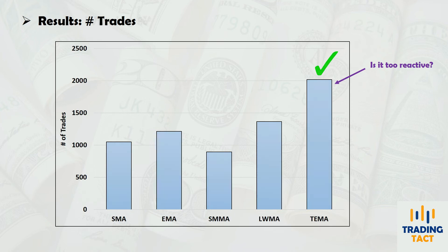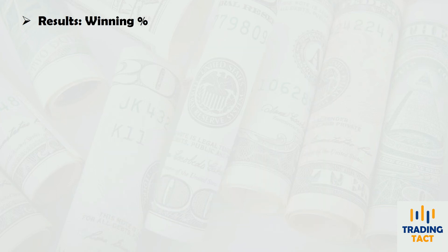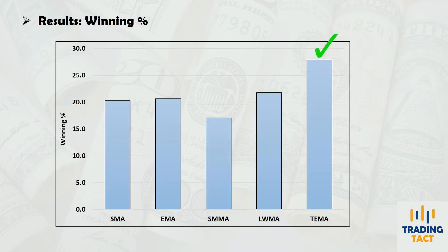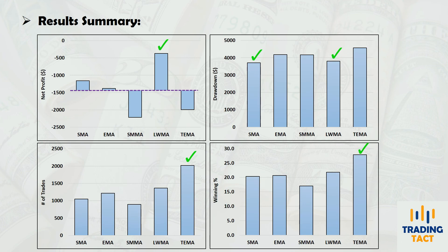Finally, we have winning percentage. Performance is miserable across the board due to the large number of whipsaw entries when markets are consolidating. Once again the triple exponential moving average pulls ahead, but unfortunately its reactiveness means the strategy often misses out on long trends, so it's unable to translate the higher win rate into net profitability.